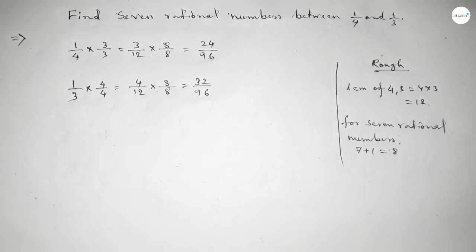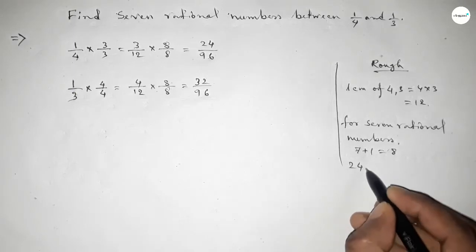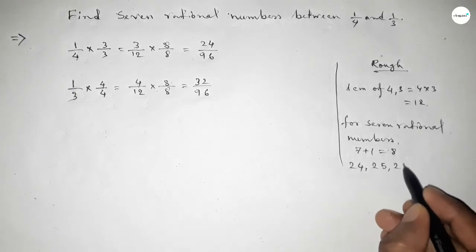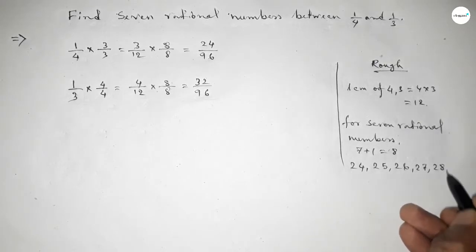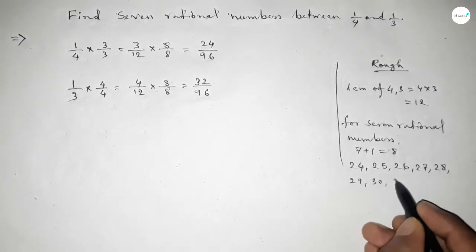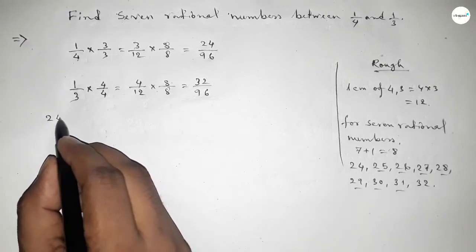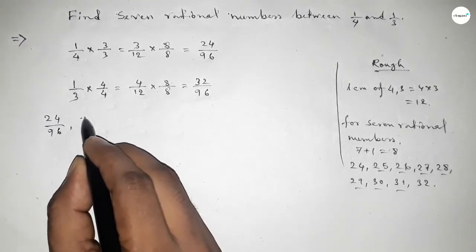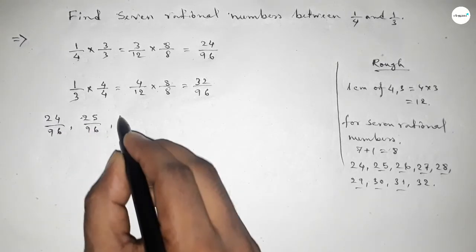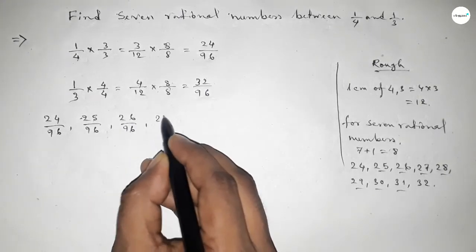Now between 24 to 32, we can get 7 natural numbers, and by these natural numbers we can form 7 rational numbers. Here all the rational numbers are 24 over 96, 25 over 96, 26 over 96, 27 over 96, up to 32 over 96.